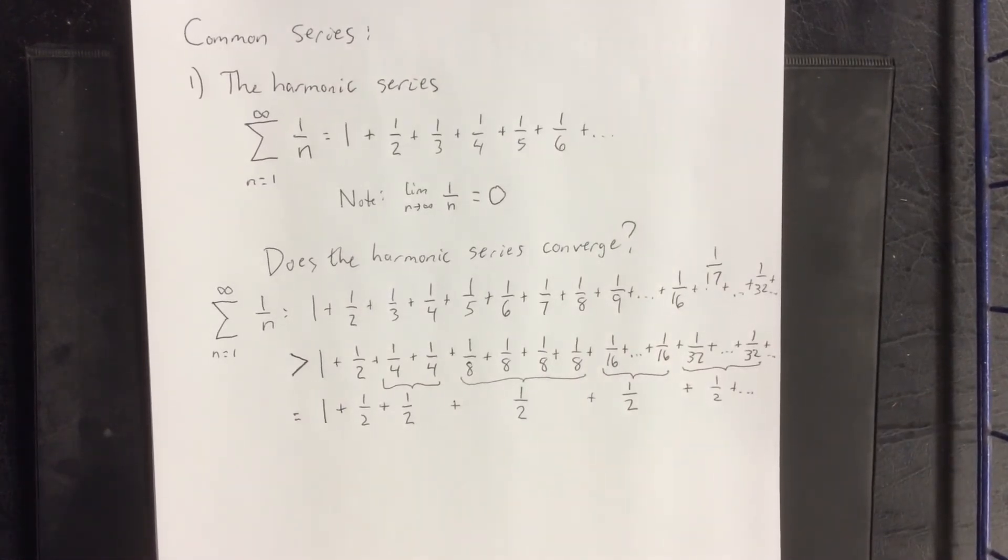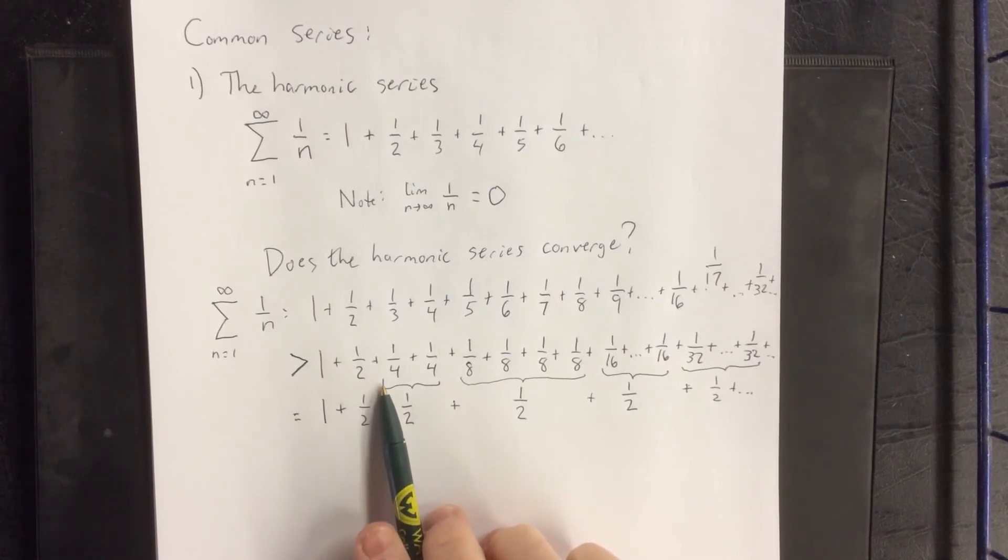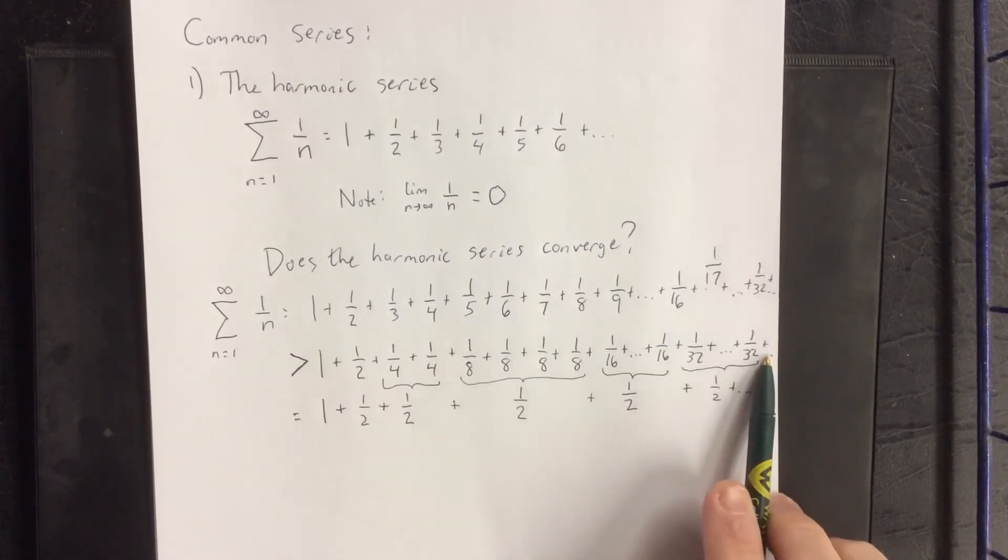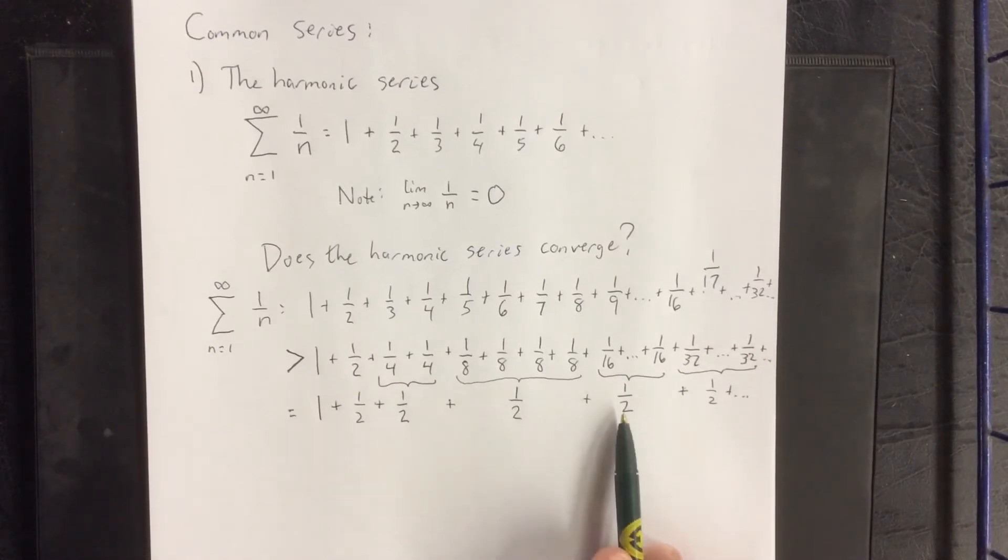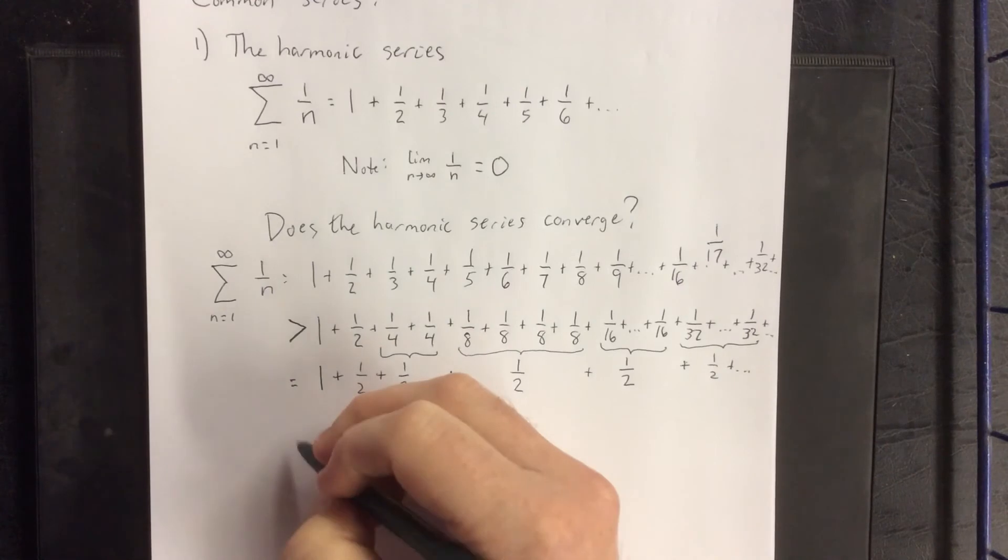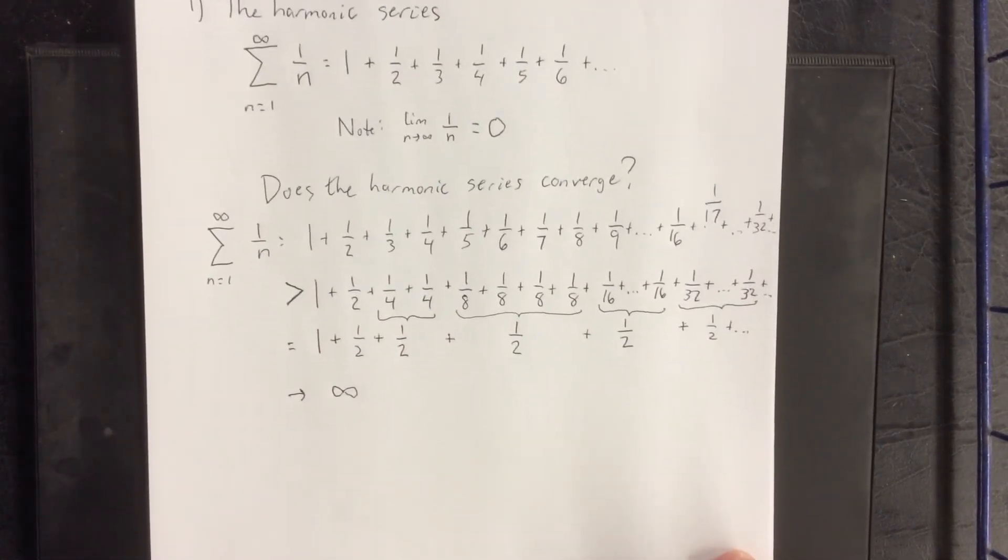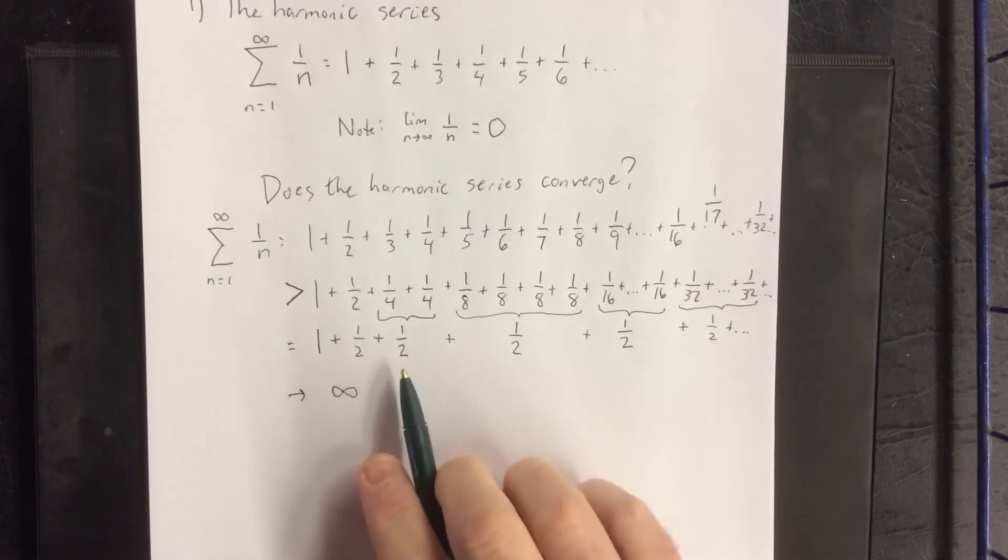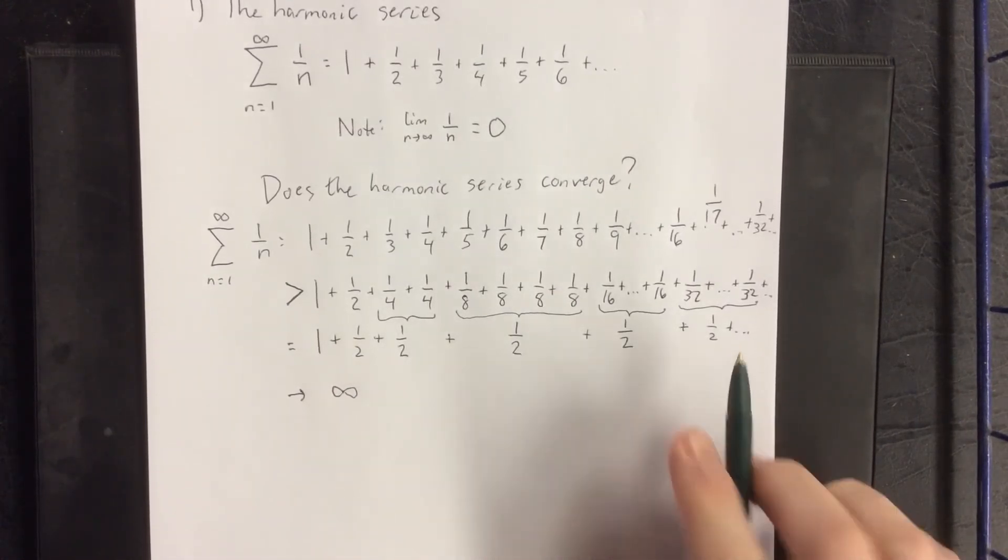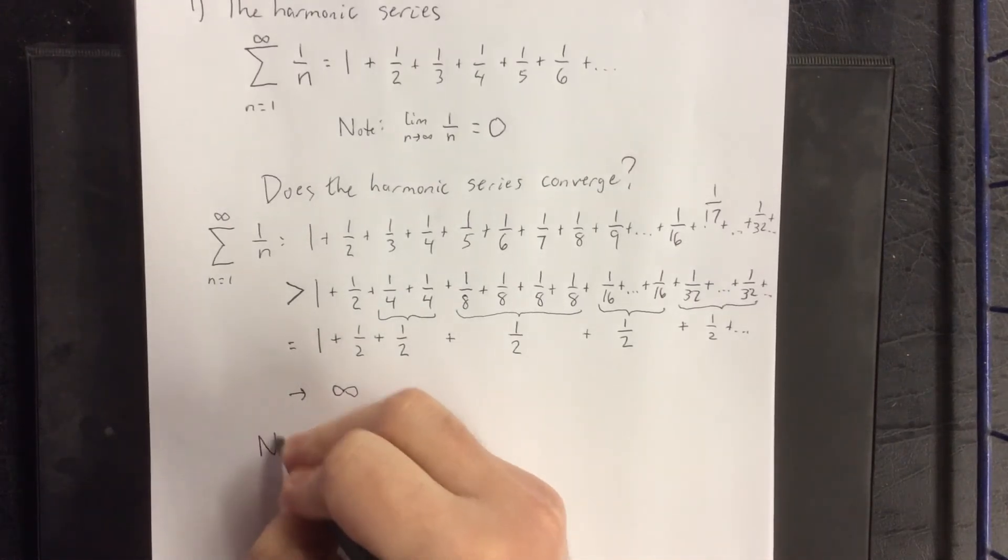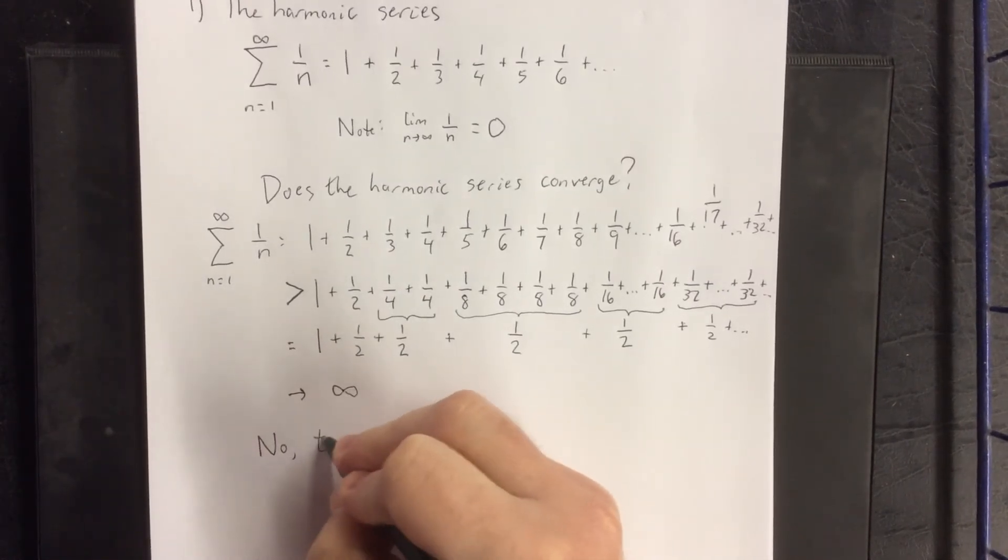Essentially, this grouping that I have created lets me know that every time I move out another 2, 4, 8, 16 places, I'll be adding something to this that is greater than 1 half. This lets me know that as n starts getting rather large, this is going to tend toward infinity. We are essentially adding 1 half together a total number of infinity times. As such, to answer the original question posed, no.